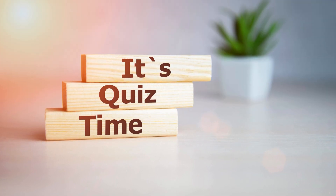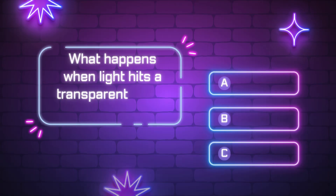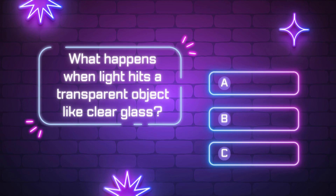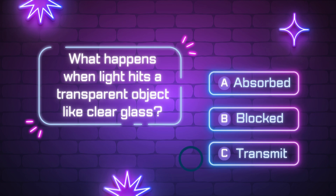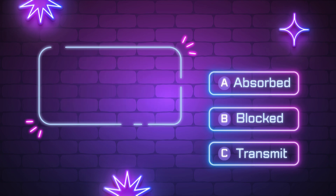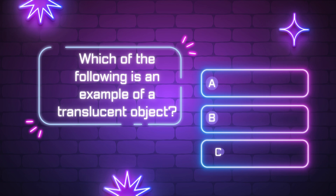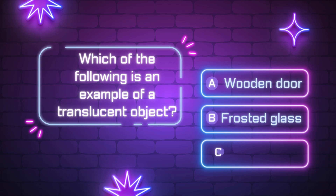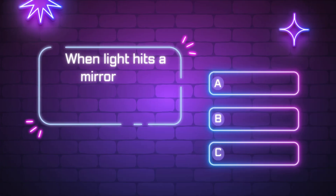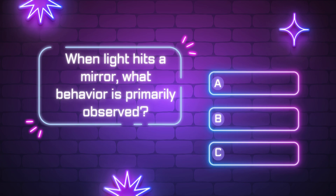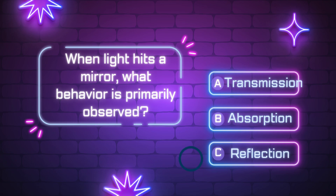It's quiz time — are you ready? What happens when light hits a transparent object like clear glass? It is completely absorbed? It is completely blocked? Or it transmits through clearly? The correct answer is: it transmits clearly. Which of the following is an example of a translucent object? A wooden door, frosted glass, or a metal plate? The answer is frosted glass. When light hits a mirror, what behavior is primarily observed — transmission, absorption, or reflection? The answer is reflection.